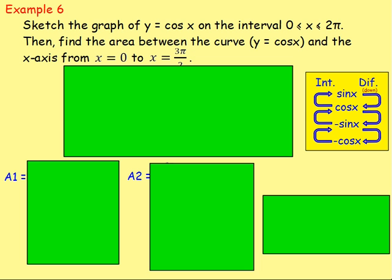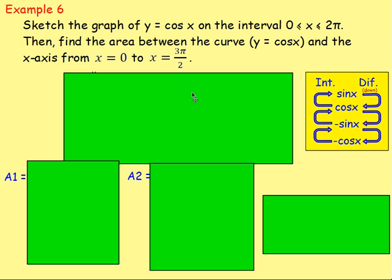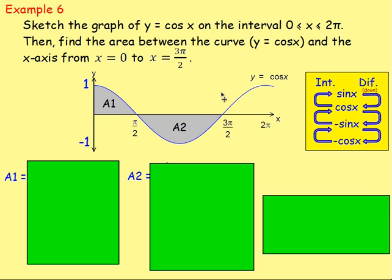Example 6: sketch the graph of y = cos(x) on the interval 0 to 2π, then find the area between y = cos(x) and the x-axis from x = 0 to x = 3π/2. The cos graph goes between 1 and negative 1 over 0 to 2π (360°). We want the area from 0 to 3π/2 (270°). We need to split the graph into two parts — the part above and the part below the x-axis.